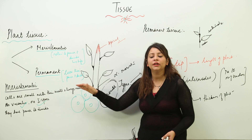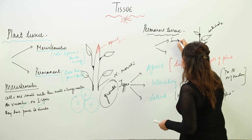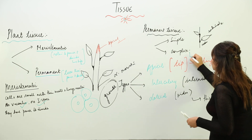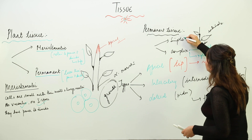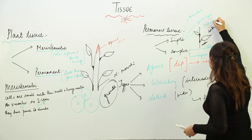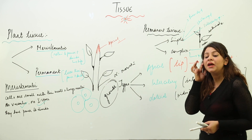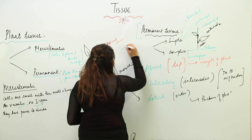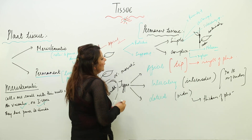Coming on to permanent tissue — these are the ones which lose their power to divide and form permanent tissue. Permanent tissue is divided into two categories: simple permanent tissue and complex permanent tissue. Complex is divided into xylem and phloem, while simple includes parenchyma, collenchyma, and sclerenchyma. Permanent tissue can also be classified as protective or supporting.